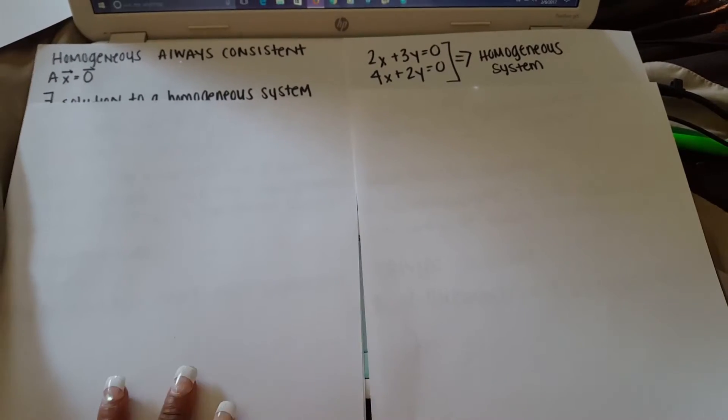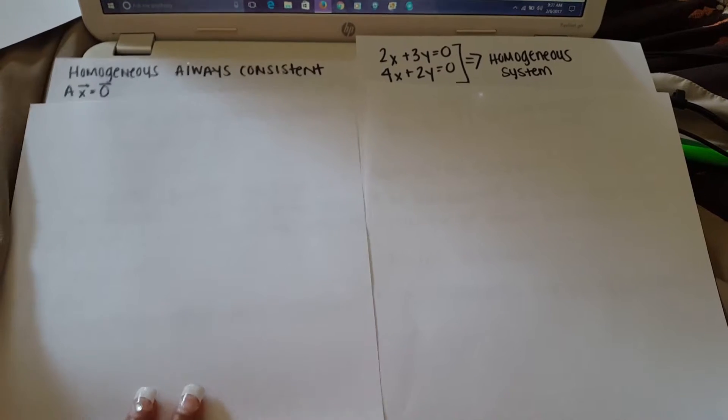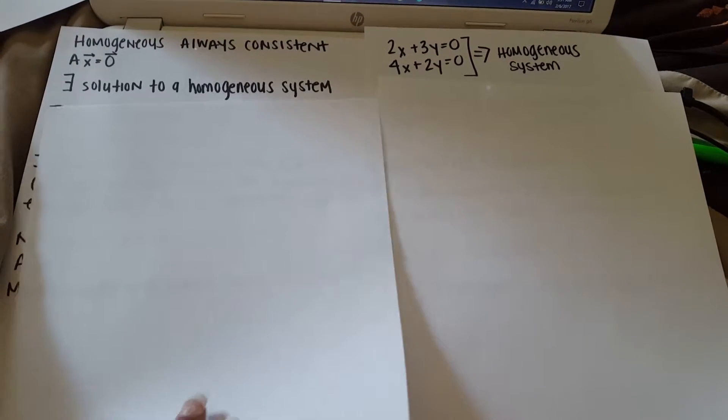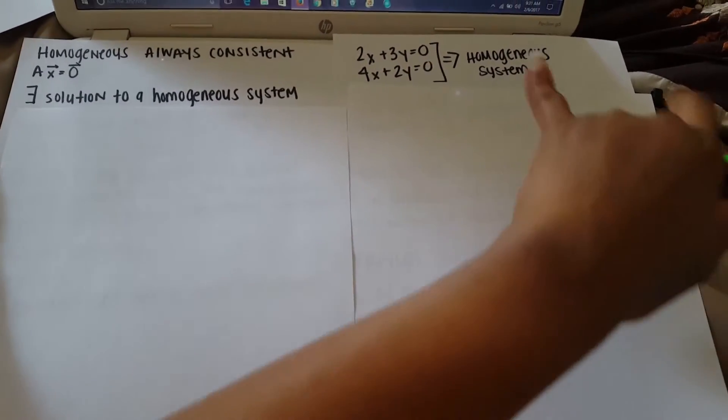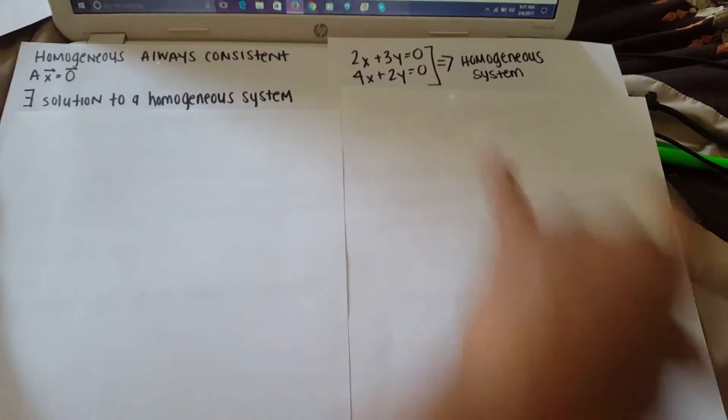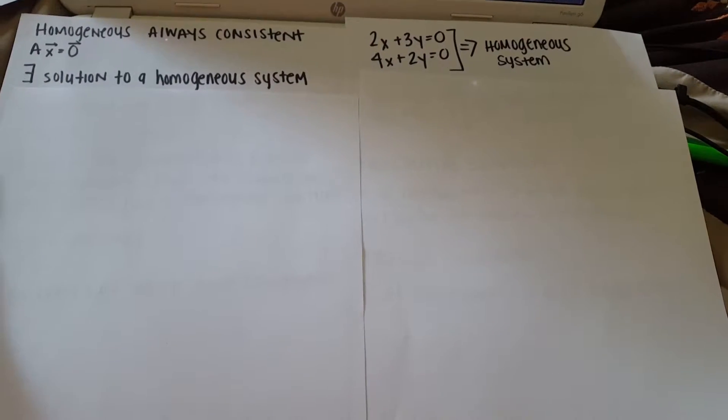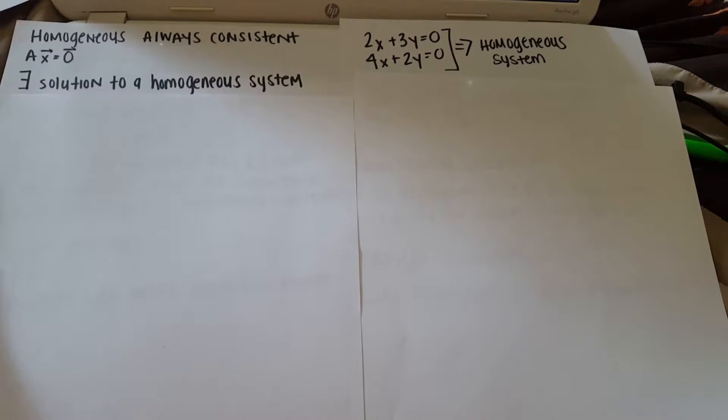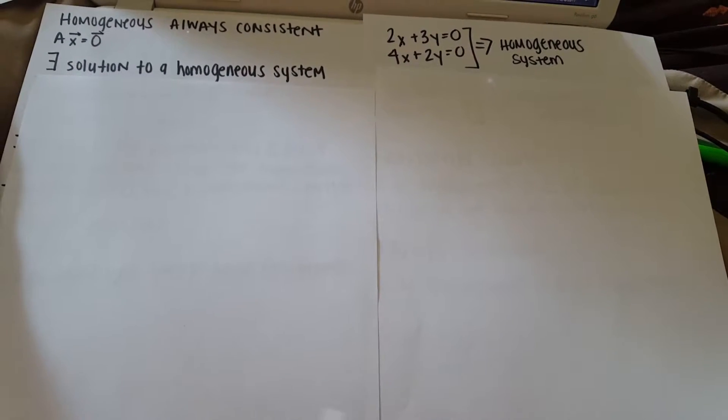To our right, you can see that our B is equal to zero, and we can automatically know that that's a homogeneous system.